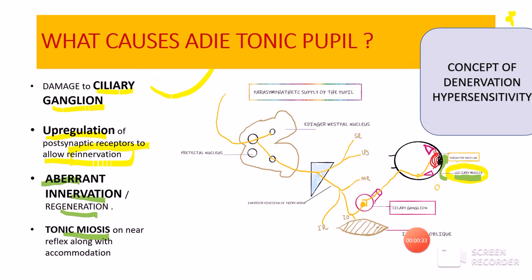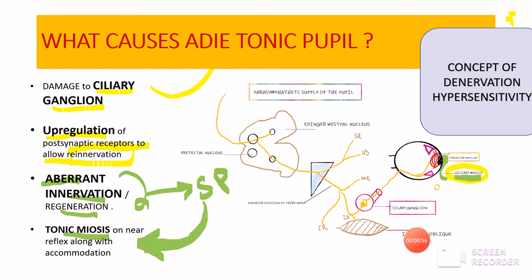Whenever near reflex is initiated — whenever the person looks at a near object — the fibers for the ciliary muscles are stimulated and because most of the fibers have now aberrantly regenerated to also go to the sphincter pupillae, the pupil will instead contract or constrict, giving rise to a tonic miosis on the near reflex along with accommodation. So because the accommodative fibers have derouted and gone towards the sphincter pupillary muscle, near reflex is actually preserved in Adie's tonic pupil. However, this near reflex is a tonic near reflex, and sphincter constriction is occurring in response to near stimulation rather than light stimulation — that is the reason we have light-near dissociation in Adie's tonic pupil.